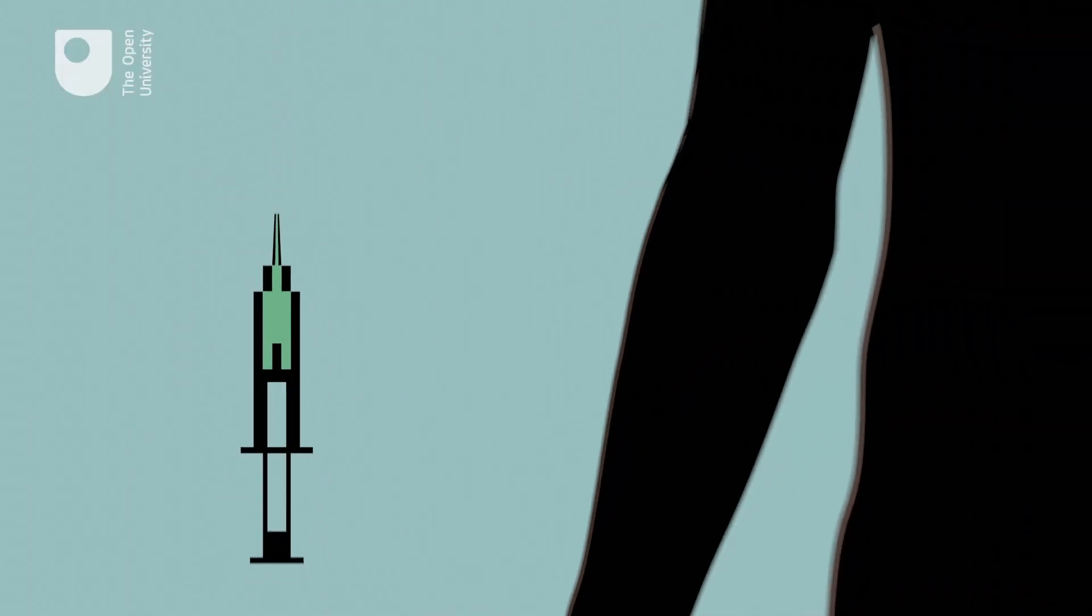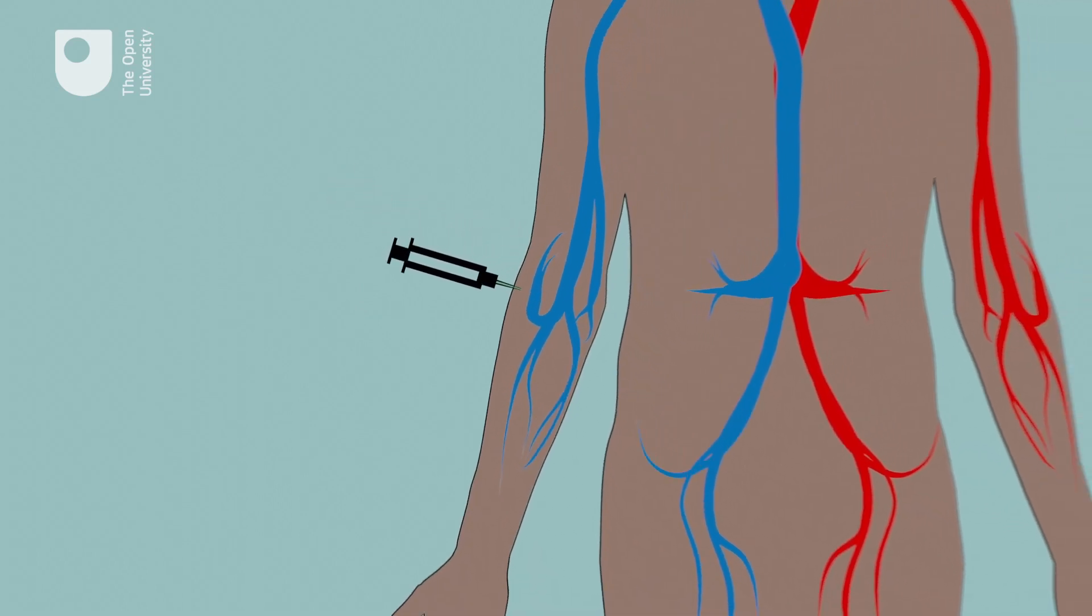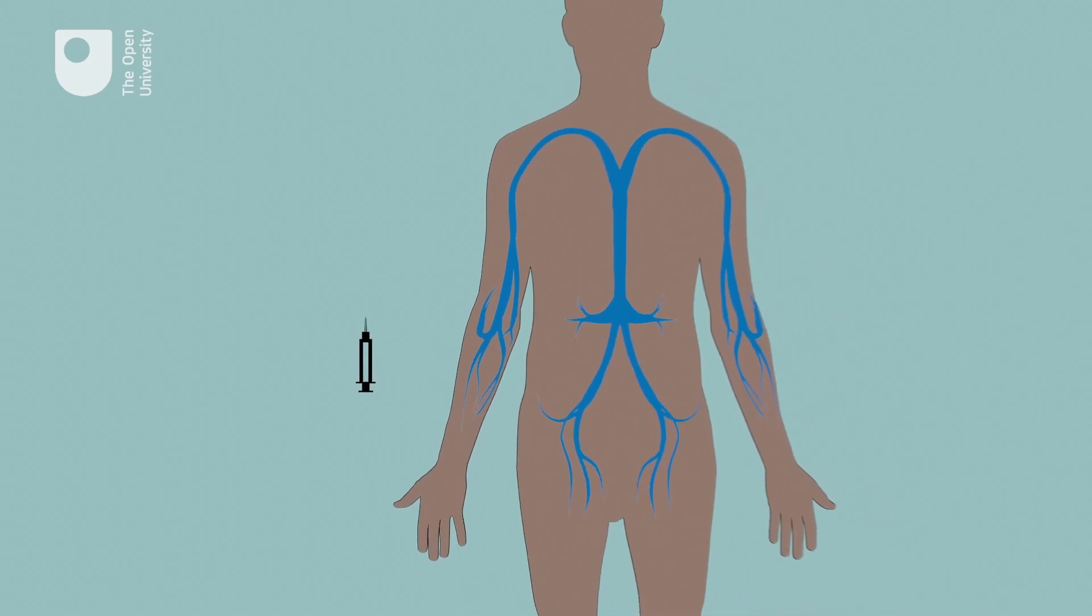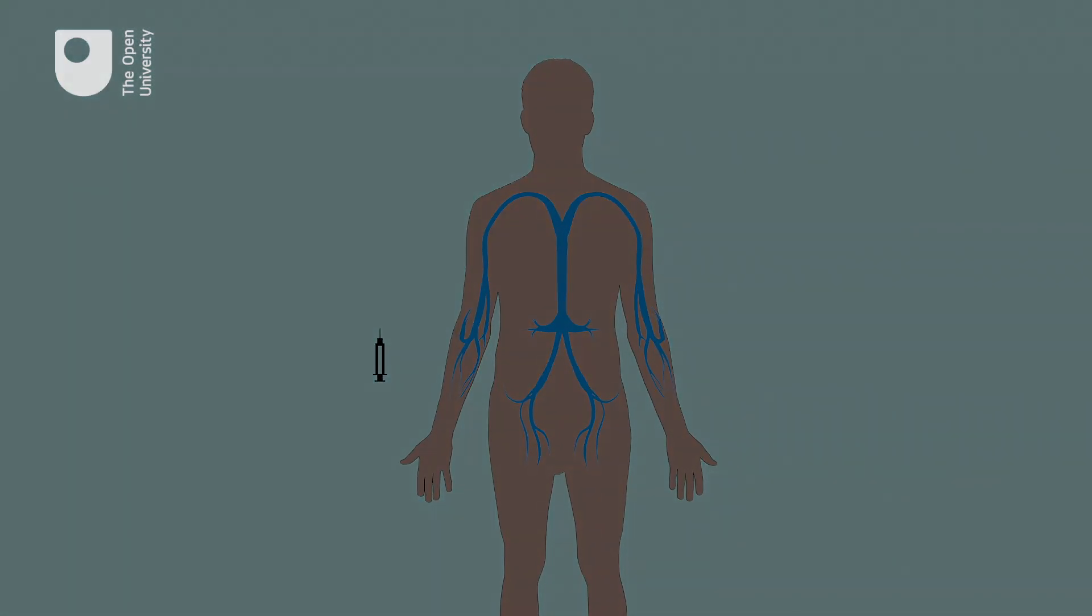Thanks to scientific experimentation, we now know that it's possible to deliberately administer a pathogen to generate an immunological memory by the production of memory B cells. It's this process that underlies vaccination and other forms of immunisation.